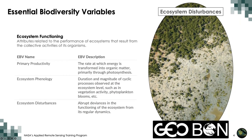One of the most critical categories of essential biodiversity variables has to do with ecosystem function—the performance of ecosystems and how the organisms in them respond to different changes in the environment. Within this category, there are three important essential biodiversity variables: primary productivity, ecosystem phenology, and ecosystem disturbance. All of these different dimensions help us understand how the environment impacts an ecosystem and how ecosystems respond.